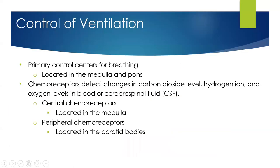The primary control of ventilation is located in the medulla and the pons, which is why the brainstem is so very important. Brainstem injuries can stop breathing, and depending on what level the brainstem injury happens, respiratory drive can become an issue. Ventilation is also controlled by chemoreceptors that detect changes in carbon dioxide levels, hydrogen ions, and oxygen levels in the blood or cerebrospinal fluid.